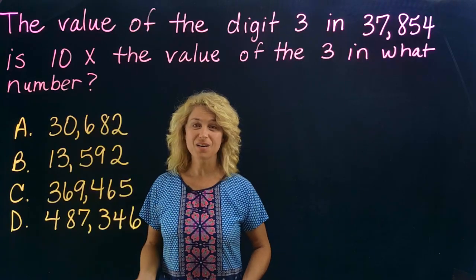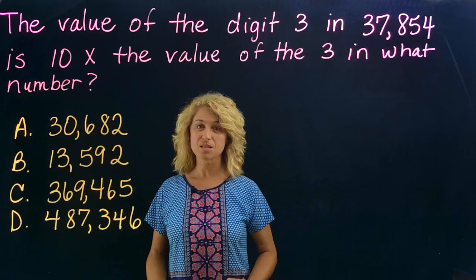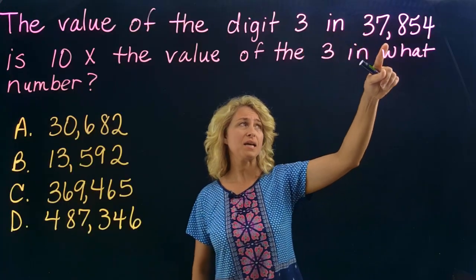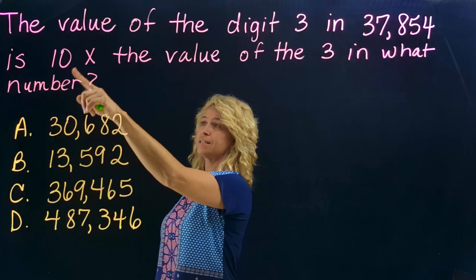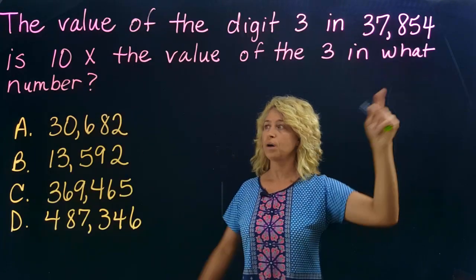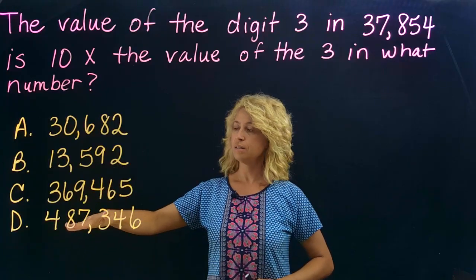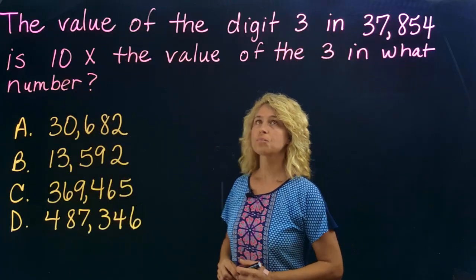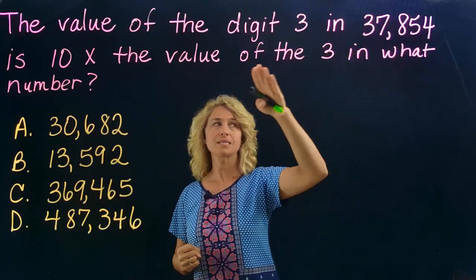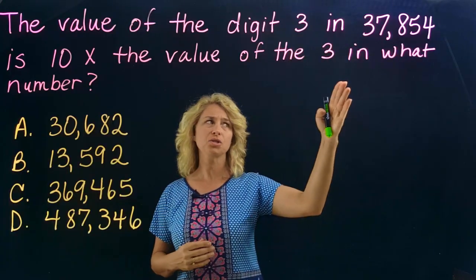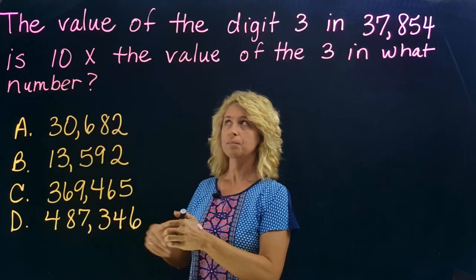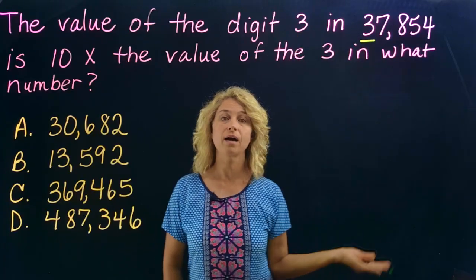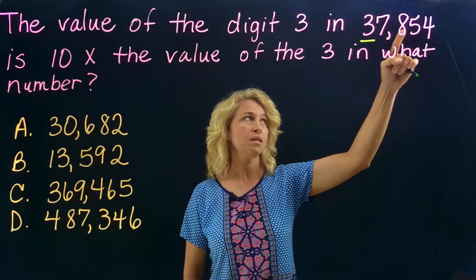All right, you're ready for the hardest problem we've done so far with ten times the number. The value of the digit three in thirty-seven thousand, eight hundred fifty-four is ten times the value of the three in what number? You've got to figure out what this even means, so we're going to write out an equation to help us solve it. What is the value of the digit three?